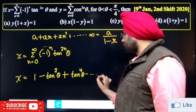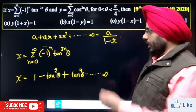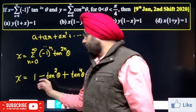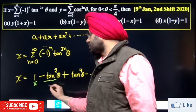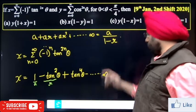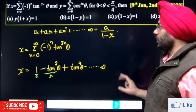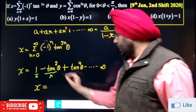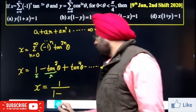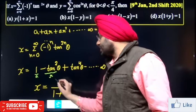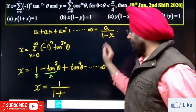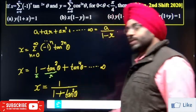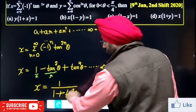The next term becomes minus again. So you can see this forms a GP. The value of a is 1, and the value of r is minus tan²θ. Now substitute into the GP formula a upon 1 minus r. X equals a upon 1 minus r, which is 1 upon 1 minus of minus tan²θ, giving 1 upon 1 plus tan²θ.